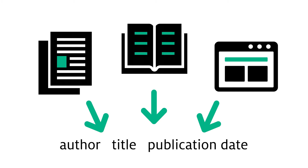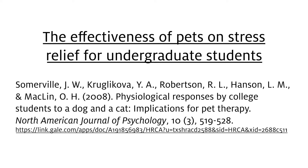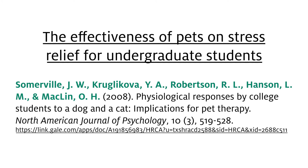Let's look at an example. Let's say you're researching the effectiveness of pets on stress relief for undergraduate students. You find the following citation for an article that sounds promising. The first thing you'll want to note is the author's name. In this case, there are five authors: Somerville, Kruglikova, Robertson, Hanson, and Macklin.